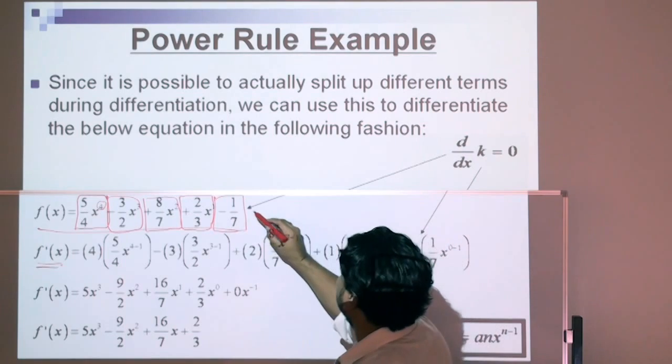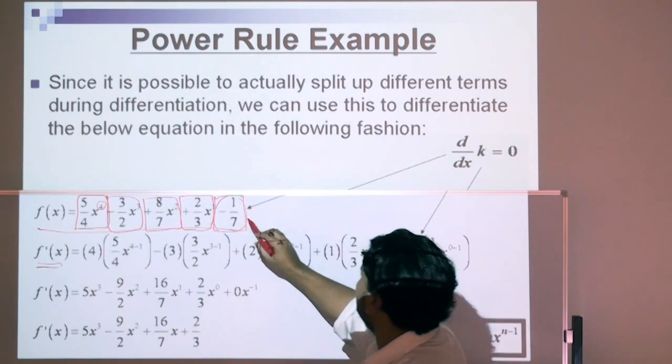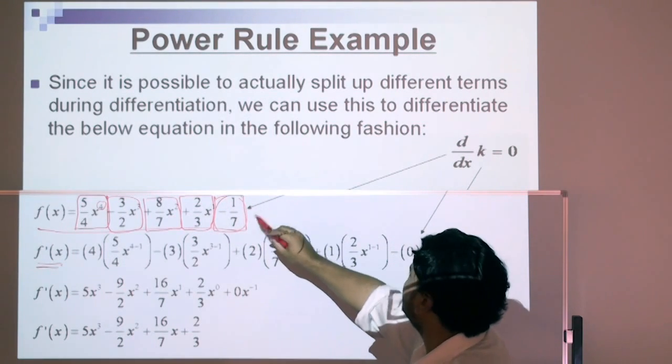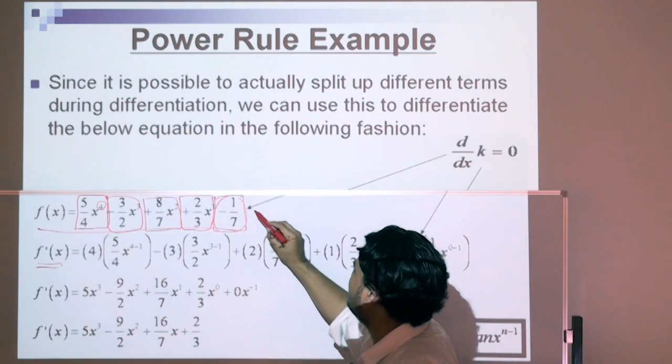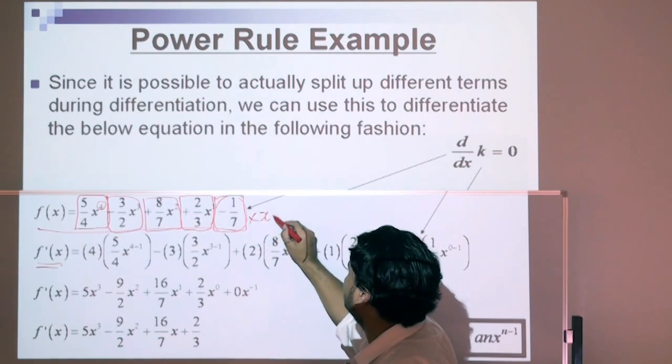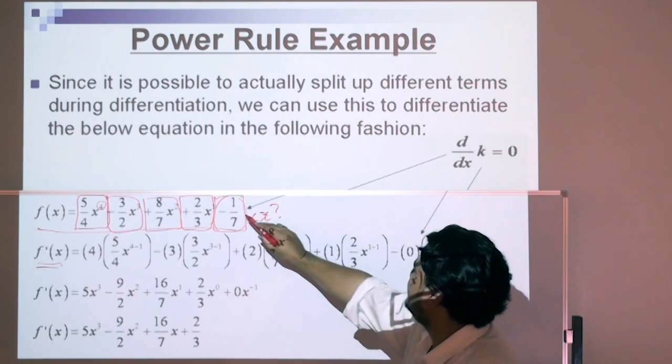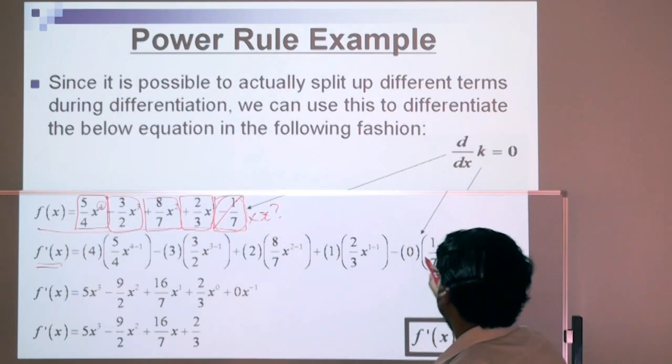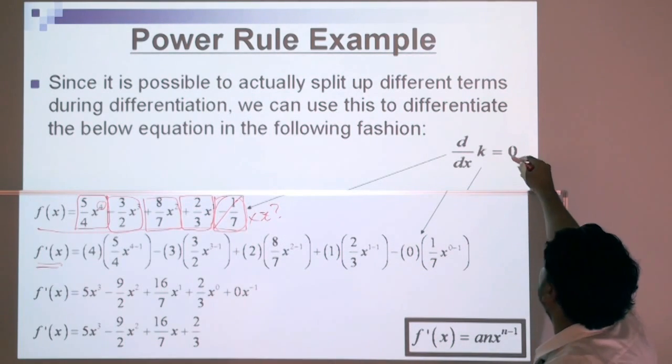There's another rule, very simple. Notice that this term over here, this is a constant rule, it doesn't have a variable, there's no x. If there's no x, this cancels out and becomes 0, it's known as a constant rule.